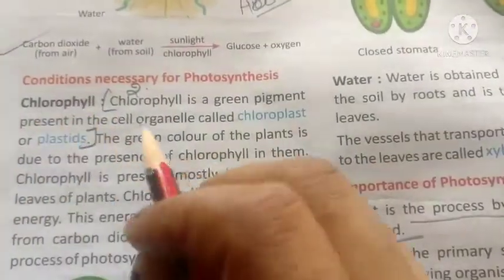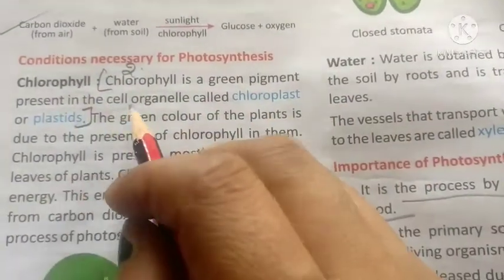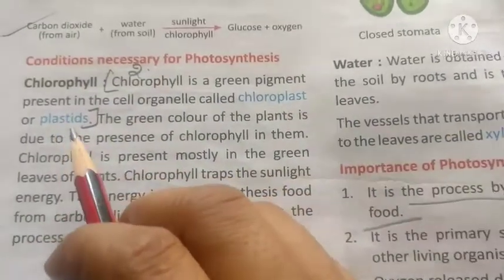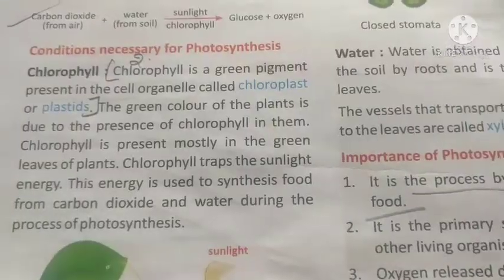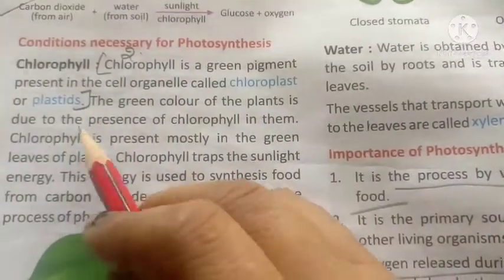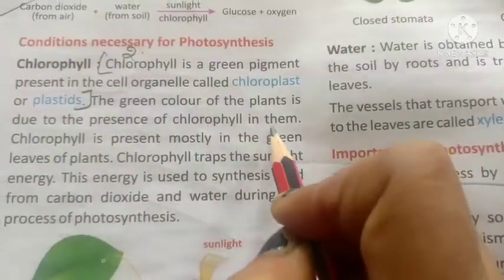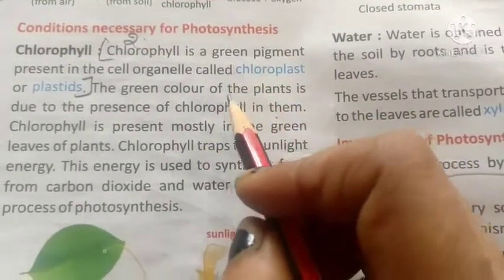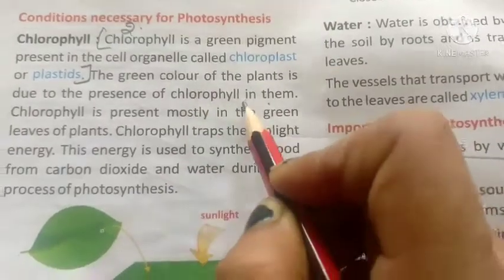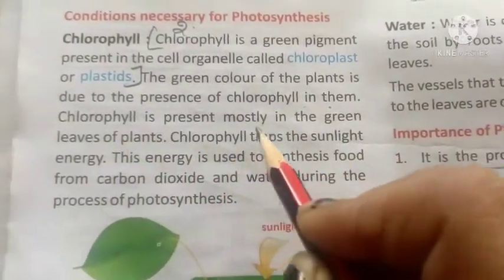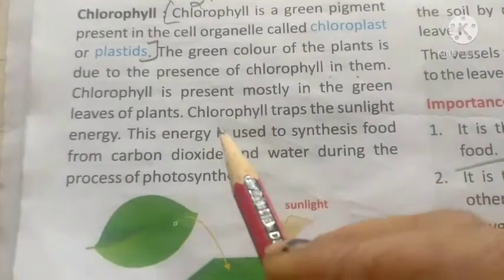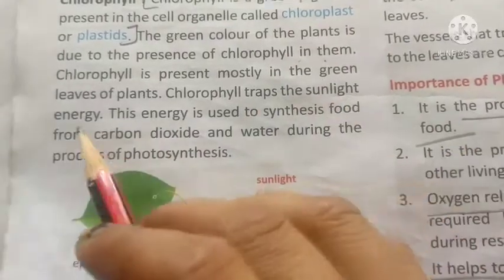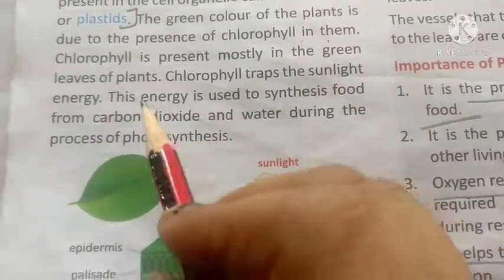The first condition is chlorophyll. Chlorophyll is a green pigment present in the cell organelle called chloroplast or plastids. The green color of the plant is due to the presence of chlorophyll. Chlorophyll is mostly present in the green leaves of the plant, and it traps sunlight energy.